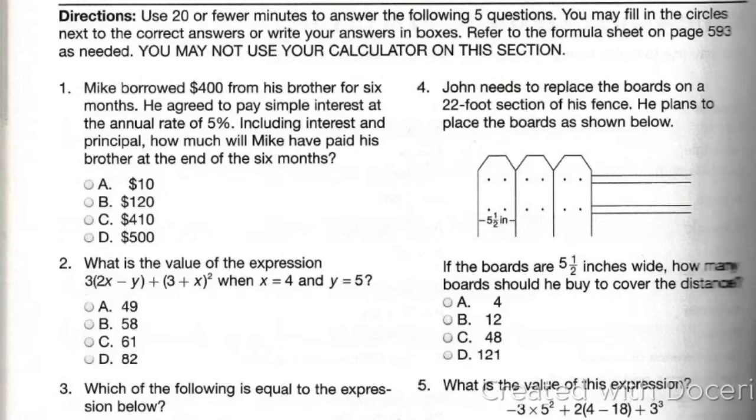Mike borrowed $400 from his brother for 6 months. He agreed to pay simple interest at the annual rate of 5%. So I'm going to write 5% right there. Including interest and principal, how much will Mike have paid his brother at the end of 6 months? So this is the principal and this is the interest. They want to know what all that's looking like with how much he paid his brother.